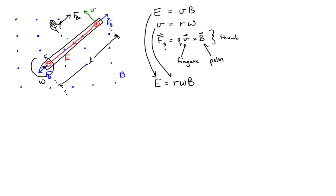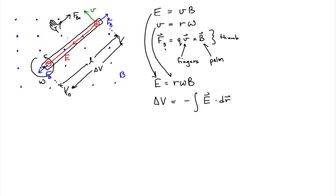We need the electric field because our goal is to find the potential difference between the ends of the bar. That potential difference is given by the negative of the line integral of the electric field. We'll integrate from low potential to high potential. The low-potential end is where the negative charges accumulate, labeled V naught; the high-potential end is where the positive charges accumulate, labeled V. The difference, delta V, is the potential difference — also called the motional EMF, since it's generated by the motion of this conductor through the magnetic field.